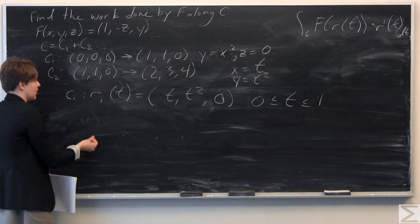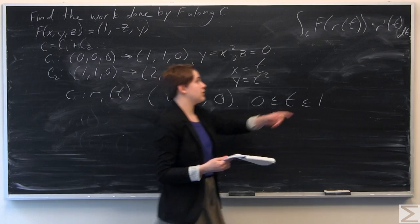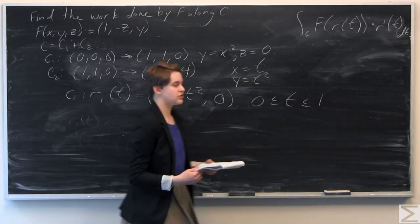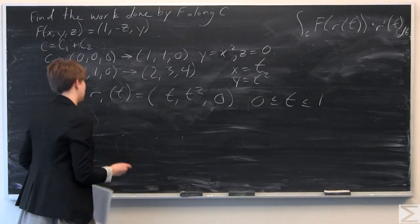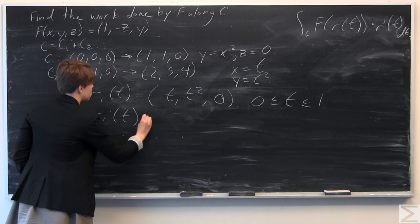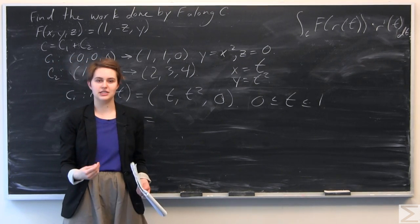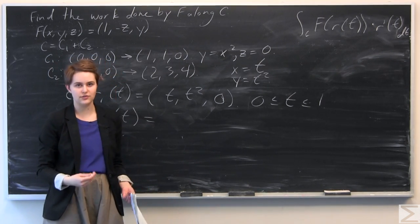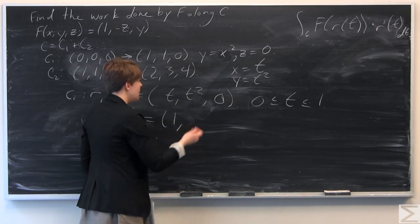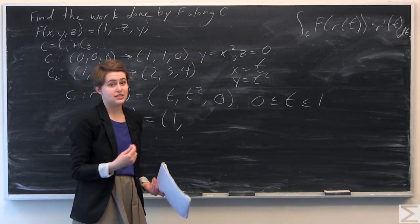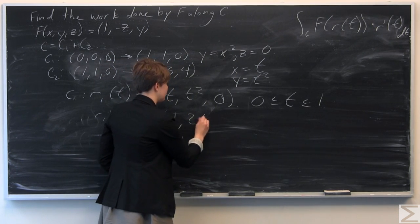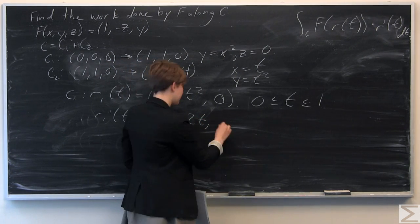Since we have R1 of T, we also need R1 prime of T from our line integral formula. Differentiating with respect to T: the derivative of T is 1, the derivative of T squared is 2T, and the derivative of 0 is 0. So R1 prime of T equals (1, 2T, 0).